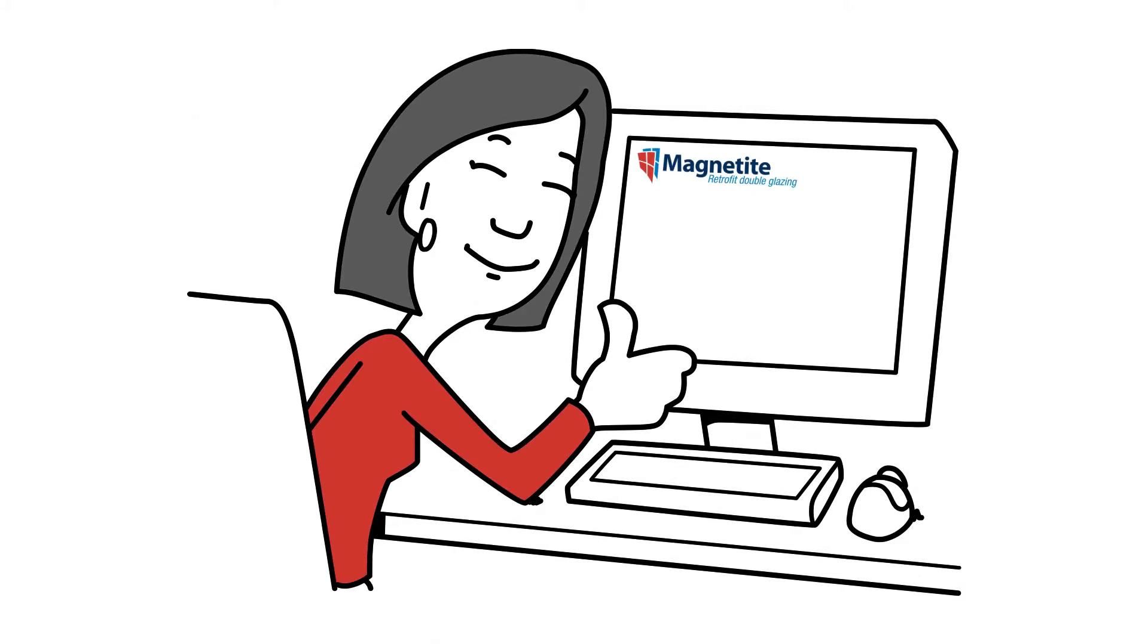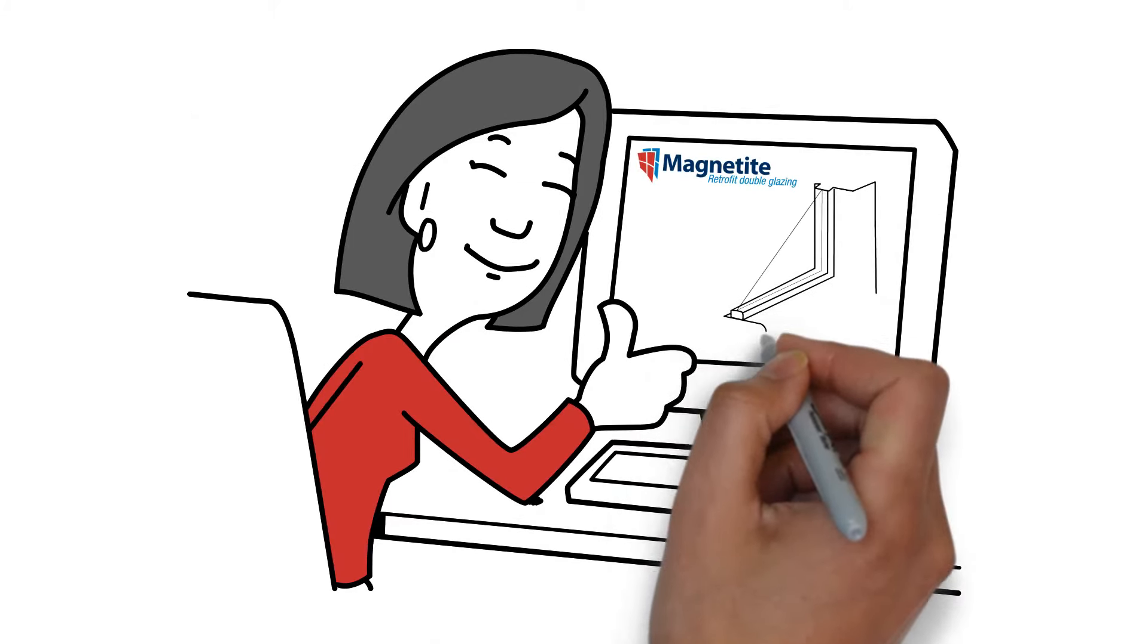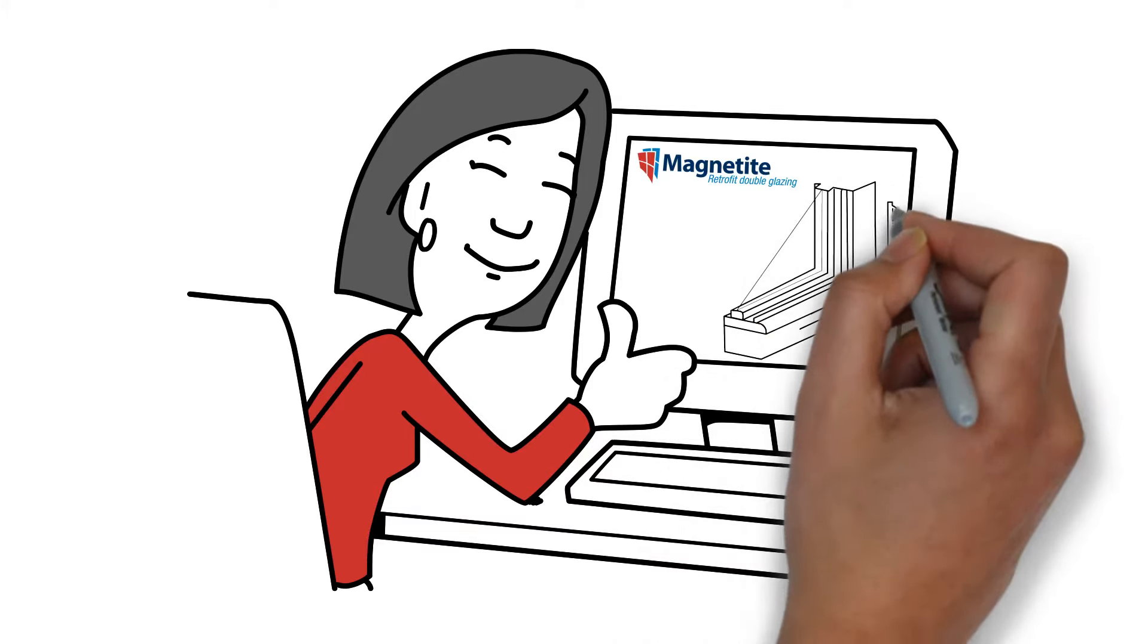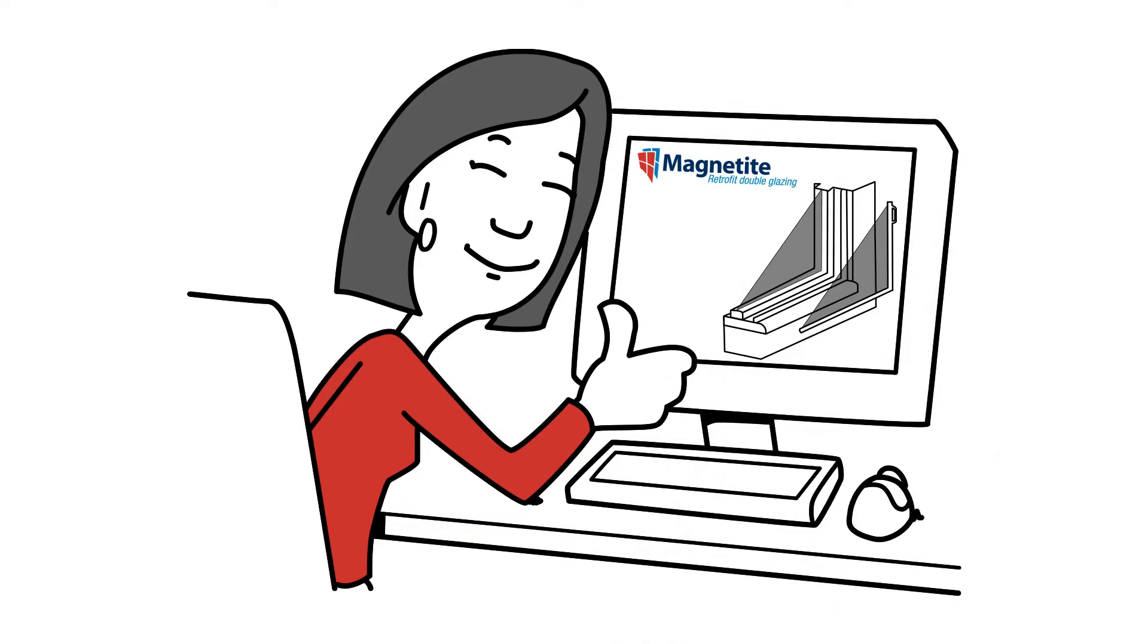She finds Magnetite, the retrofit double glazing solution, which is installed from the inside and is practically invisible from the outside.